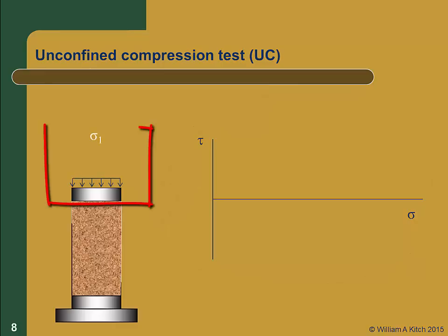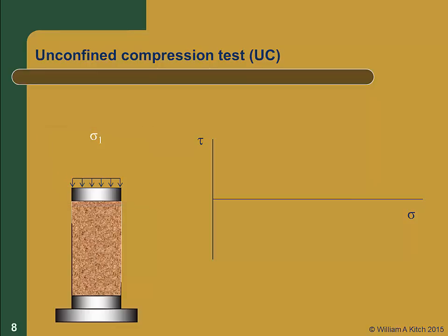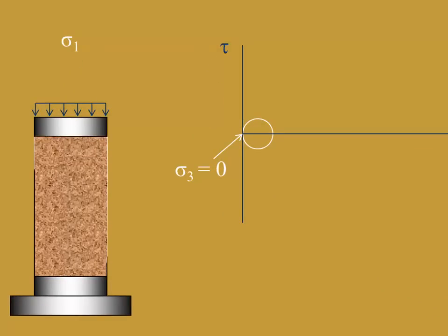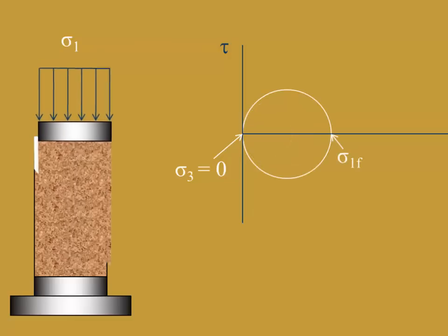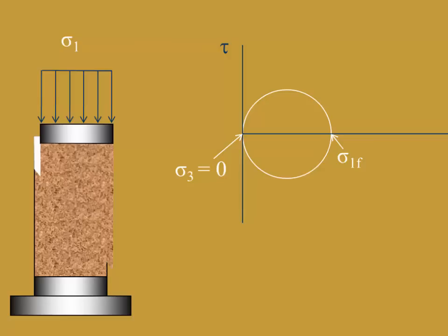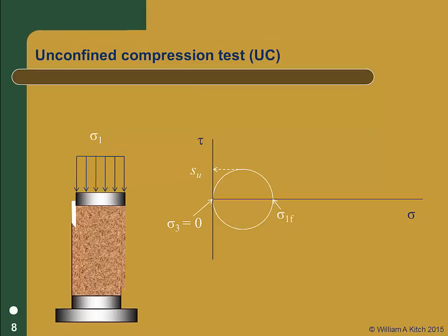In the unconfined compression test, a vertical stress is applied to the soil without any lateral confining stress; that is, the minor principal stress sigma 3 is equal to 0. Therefore, the Mohr circles for this test are all tangent to the tau axis. The vertical stress is then increased until the soil fails. At failure, the maximum principal stress is denoted sigma 1f. This is a total stress test; we have no measure of the pore pressures and cannot determine the effective stresses in the soil. The peak shear stress at failure is a measure of the undrained strength S_u. There is no failure envelope for the unconfined compression test since we have only one Mohr circle in this test.